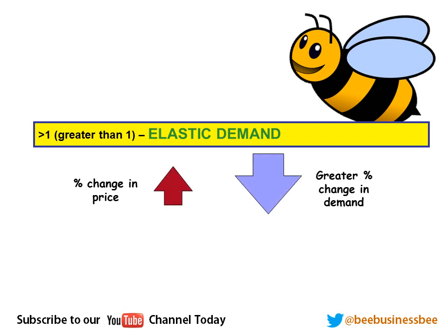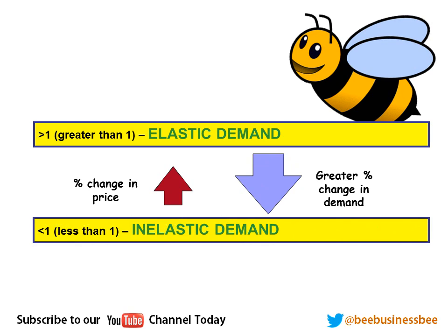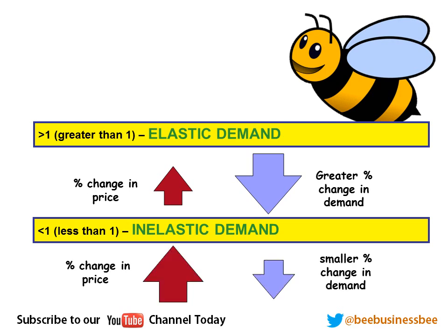What that means is that if we increase the price by, say, 5%, we'd have a greater drop in demand — maybe 10% or 20%. So a 5% increase would lose 20% of our customers, which is not good for the business. On the other hand, if the answer is less than 1, it's inelastic demand. In our example, if we increase our price by 20%, we may only lose 10% of our customers — that's quite good.